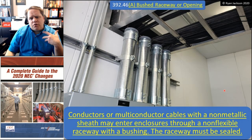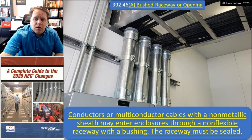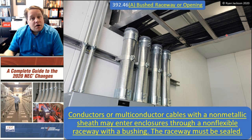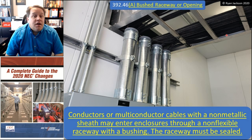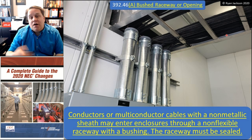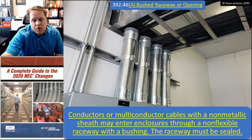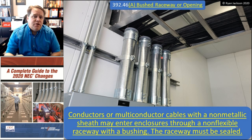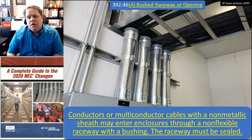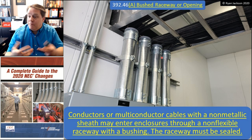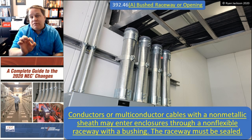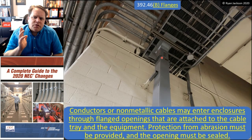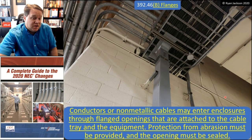We do not need a box where the conductors or cables enter the raceway, but we do need a bushing that protects them from abrasion. These bonding bushings have a plastic insert, which satisfies the rule. When entering an enclosure — going from the tray to the panelboard, for example — option A allows conductors or multi-conductor cables with a non-metallic sheath to enter enclosures through a non-flexible raceway with a bushing, and the raceway has to be sealed with something like duct seal putty to prevent flammable materials from getting inside the cabinet.